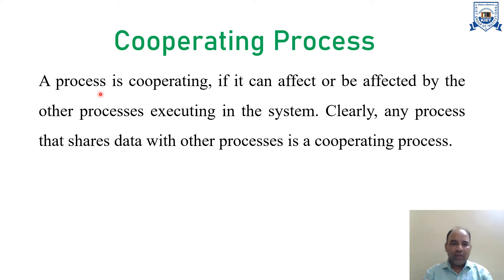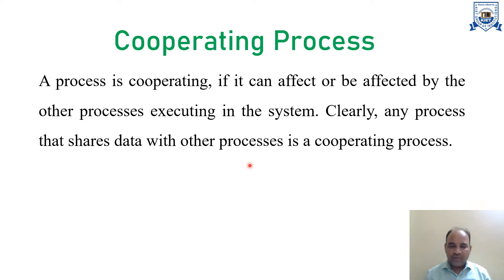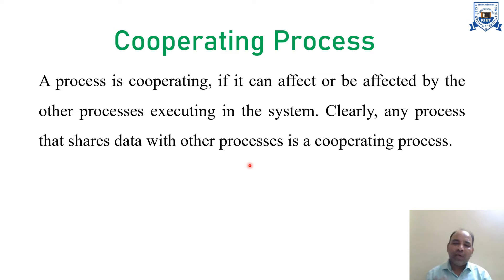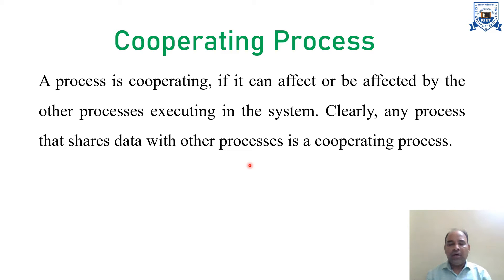A process is cooperating if it can affect or be affected by other processes executing in the system — meaning when a particular process requires sharing data with another process, it is called a cooperating process. There are several reasons for this: information sharing is one important aspect, where one process may require some information for its own execution. Other aspects include computational speed-up, modularity, and convenience.